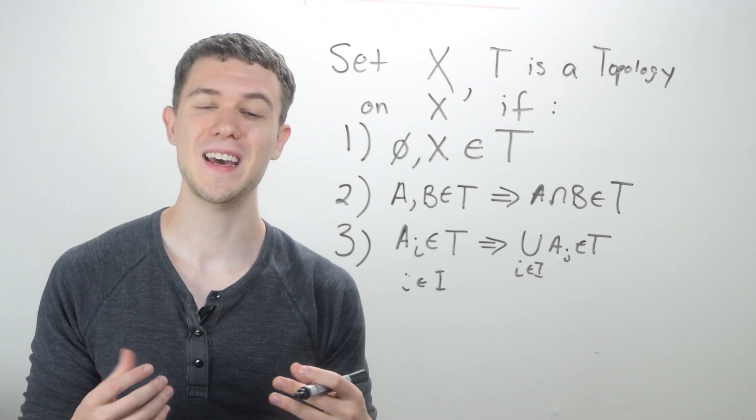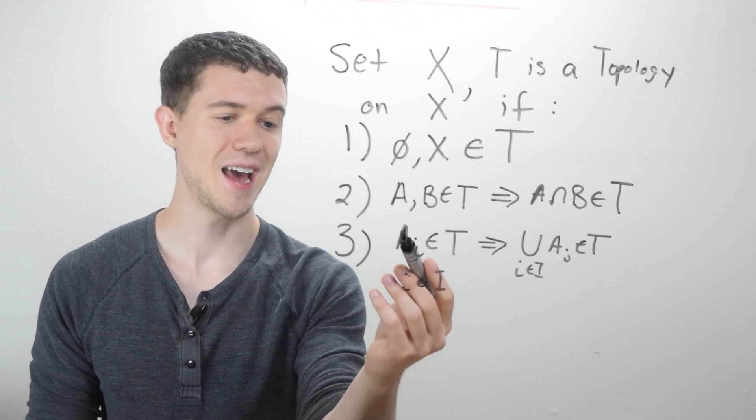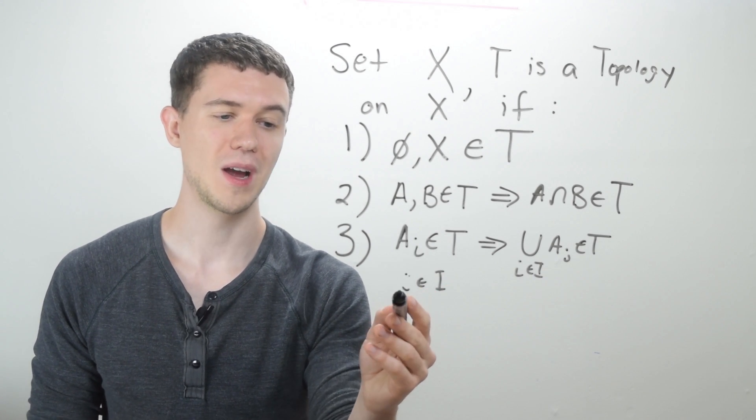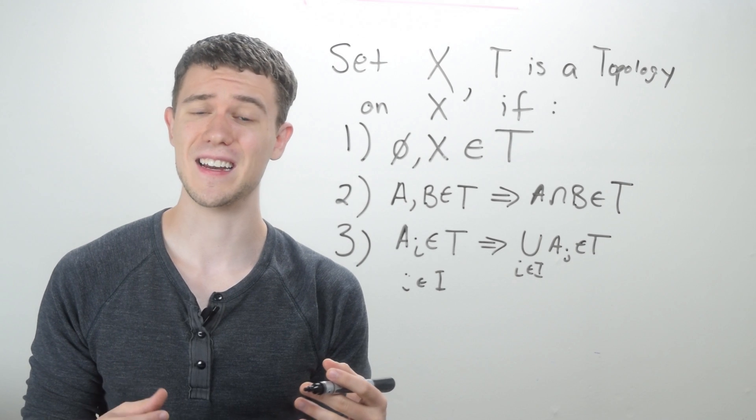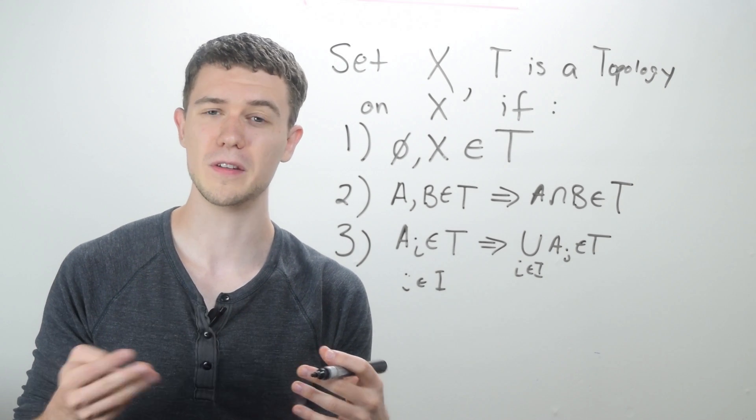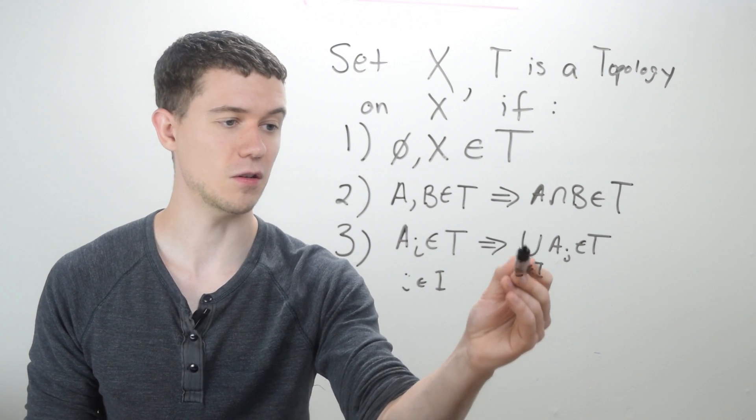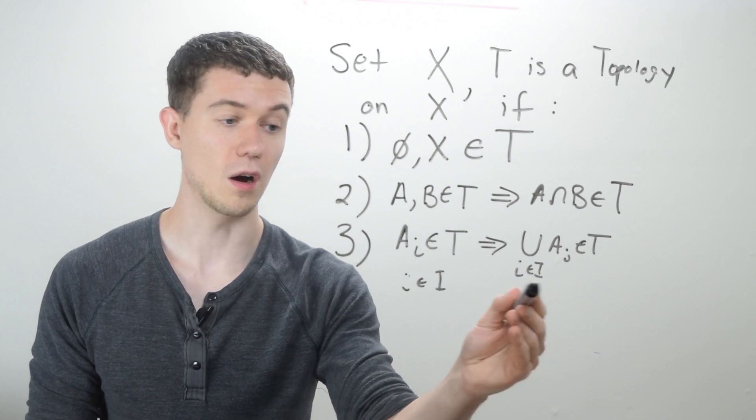So we say that T is closed under arbitrary unions. And you'll see my notation here, I just said a sub i. So i is just like an indexing set, you can think of it like the first element, the second element, the third element, just a way for us to categorize these things. And this is just a fancy notation for the union of all of them.